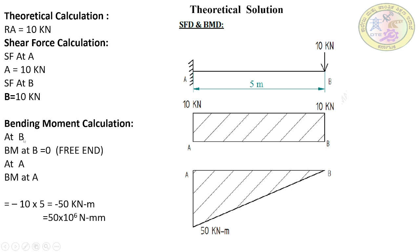Bending moment at B is zero. At the free end, the bending moment is always zero because although a load of 10 kilo newton is acting, the distance from that load to point B is zero. So 10 into 0 equals 0. The bending moment at the free end is always zero.